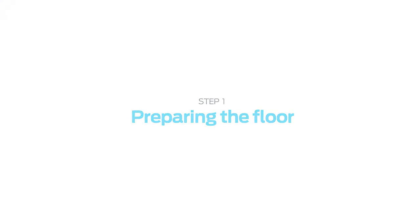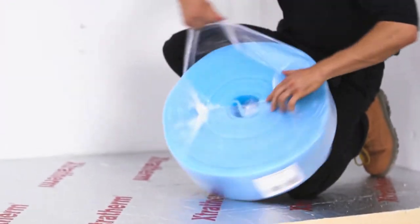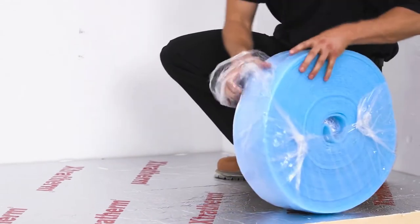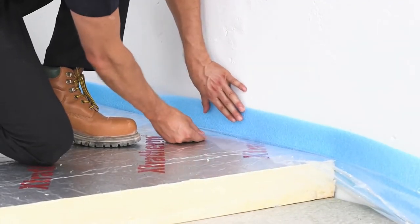Preparing the floor. An expansion strip is required to accommodate expansion that occurs within the screed as a result of it heating up. This strip should be fitted around the room's perimeter.